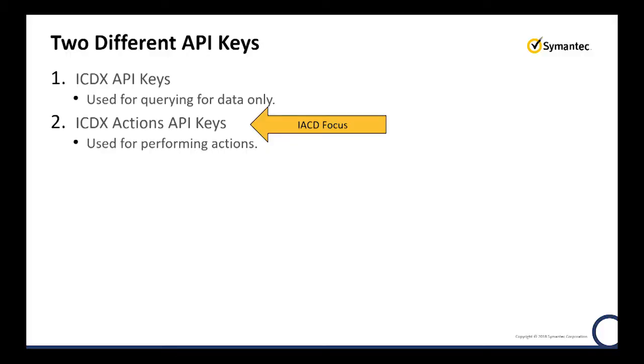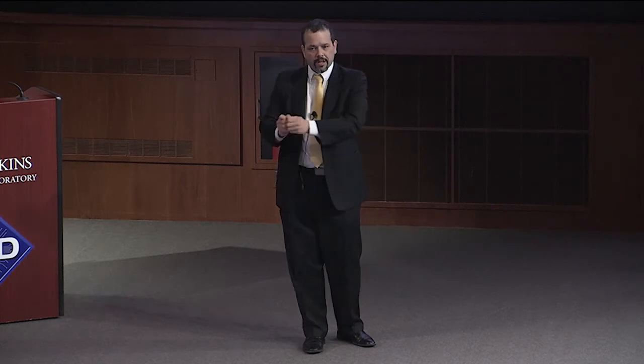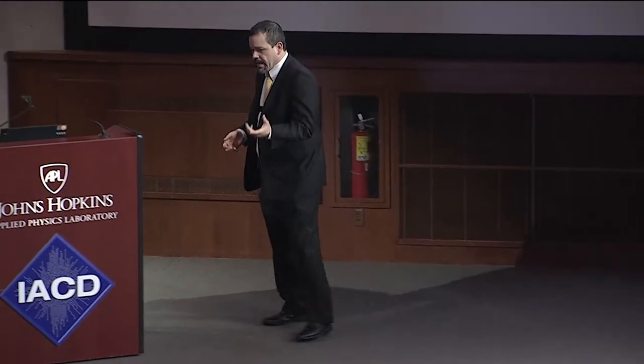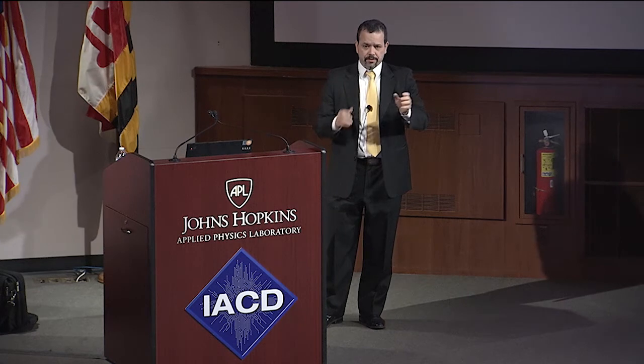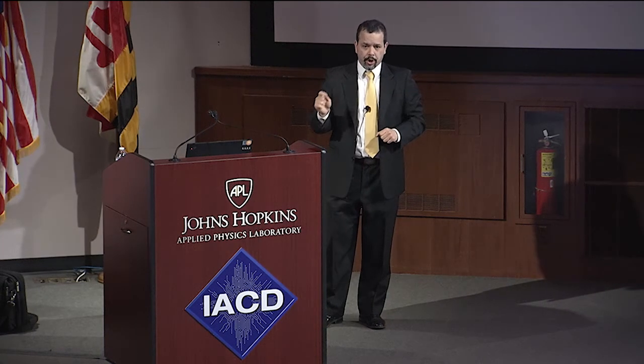There are two types of ways to call into ICDX — two open APIs. The top one is for searching, so you can actually search the normalized data in ICDX. The second one is the OpenC2-inspired API. They both require keys, because obviously you don't want anyone just asking for everything — there's a lot of confidential data going into this thing. You can have a key that gives one application only search capability, and another application that can execute and take actions. The actions key is granular down to the OpenC2 command — whether it's delete file, blacklist a file, or contain a device — those are all permissions you can assign per API key.